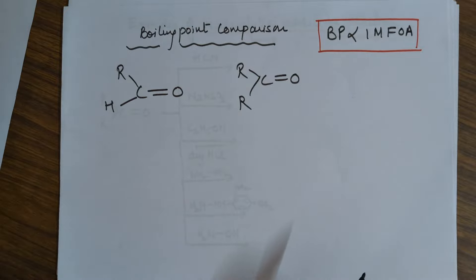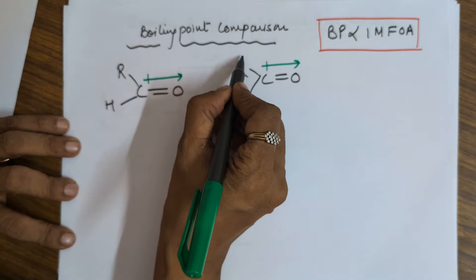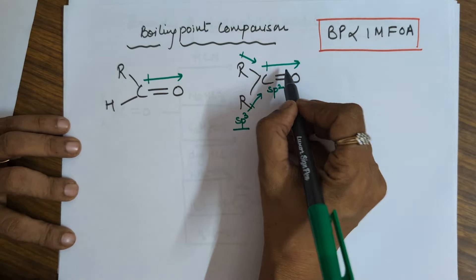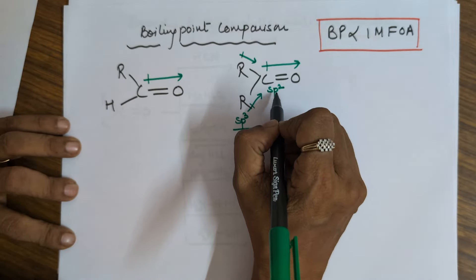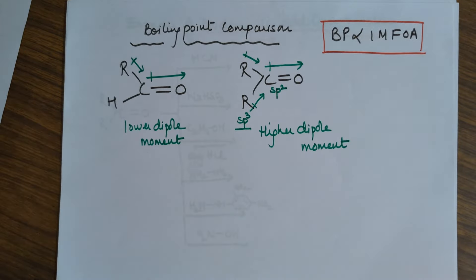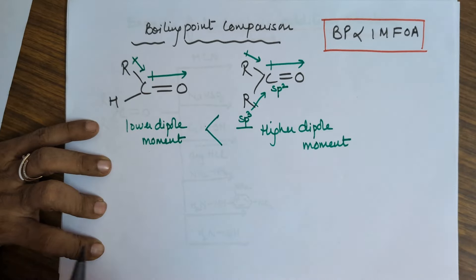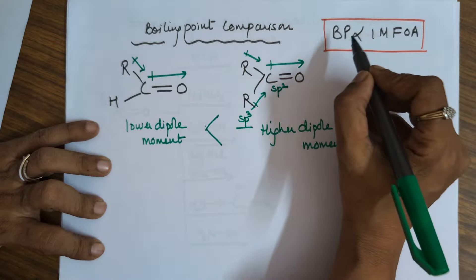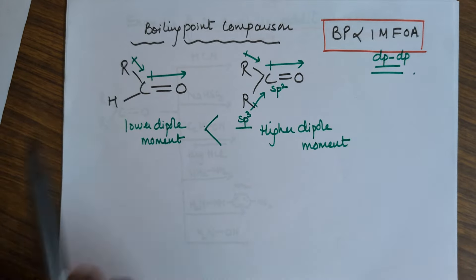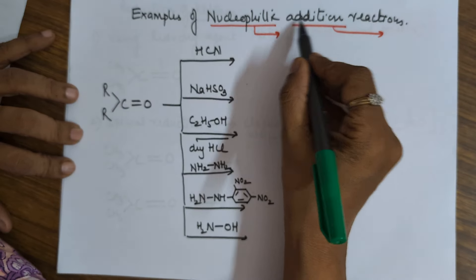Moving to the physical property for boiling point comparison. This is the dipole moment of an aldehyde; this is the dipole moment of a ketone because oxygen is more electronegative. R groups are electron providers because they have sp3 hybridization, while the carbonyl carbon has sp2 hybridization — sp2 has more s-character and is more electronegative. So the electron shift is from R to the carbonyl carbon. The dipole moment for aldehydes would be lower while for ketones it would be higher. Therefore, the boiling point of ketones is more than that of aldehydes, since dipole-dipole interaction is stronger for ketones.